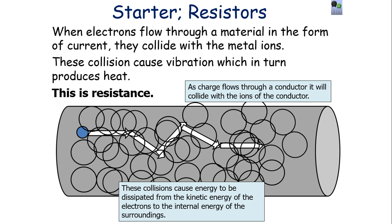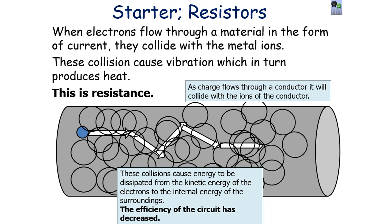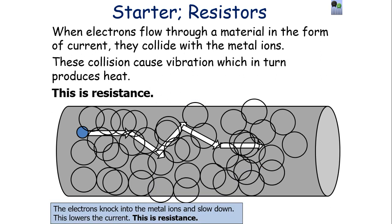The wire gets hotter. Fundamentally, the efficiency of the circuit decreases because we don't want energy dissipating to the internal energy of the surroundings. So the electrons travelling through the wire knock into the metal ions, they slow down — that's resistance — which in turn lowers the current, the rate of flow of charge.